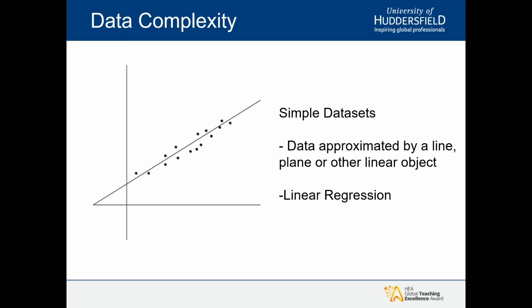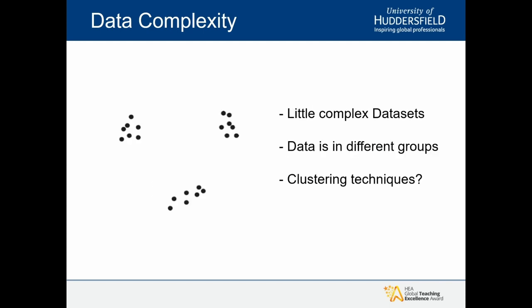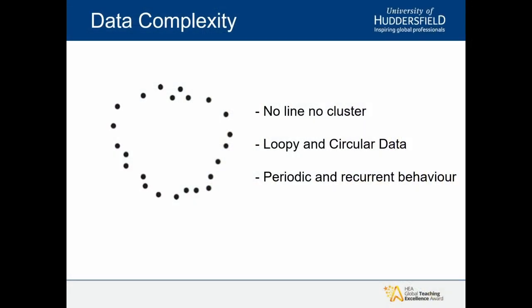To give some examples of different kinds of data sets — data could be as simple as a straight line, where you can use a simple algorithm like linear regression. However, data could also appear in the form of different groups of similar data, where we have clusters and need different techniques to process them. Data could also be in a format with no particular line or continuous transition and no particular clusters — the data is in the form of a loop. What algorithm is required to process such data?